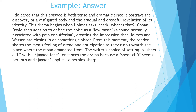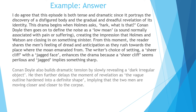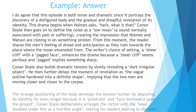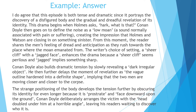The writer's choice of setting — a sheer cliff and a jagged face — enhances the drama because a sheer cliff seems perilous and jagged implies something sharp. Conan Doyle also builds dramatic tension by slowly revealing a dark, irregular object. He then further delays the moment of revelation as "the vague outline hardened into a definite shape", implying that the two men are moving closer and closer to the corpse. The strange positioning of the body develops the tension further by obscuring its identity for even longer, because it is prostrate and face downward upon the ground. Conan Doyle deliberately arranges the victim with "the head doubled under him at a horrible angle", leaving his readers waiting to discover who it is.